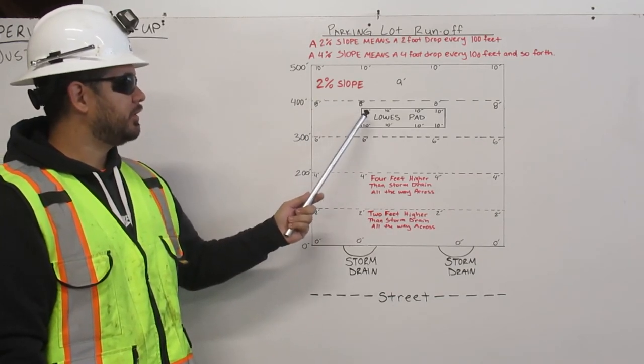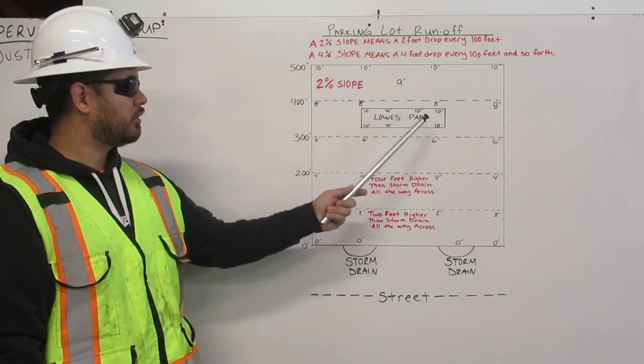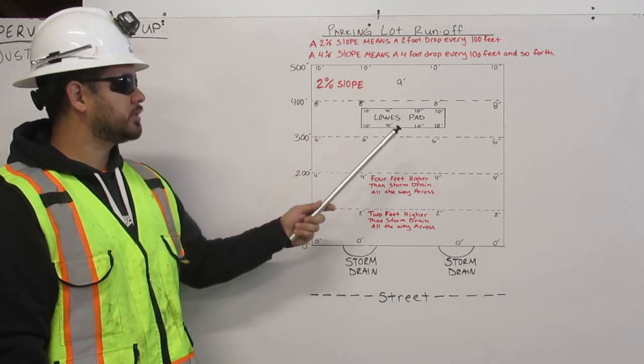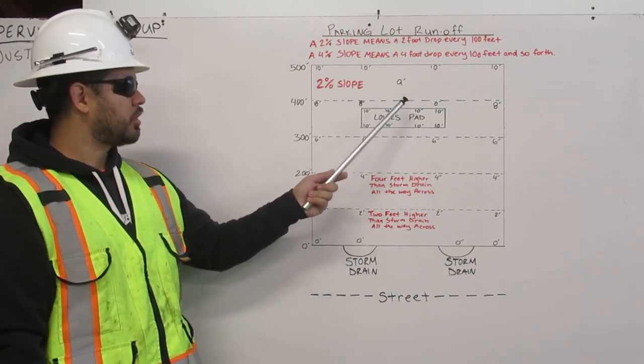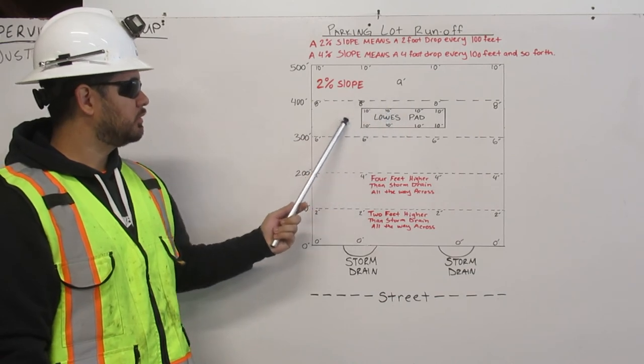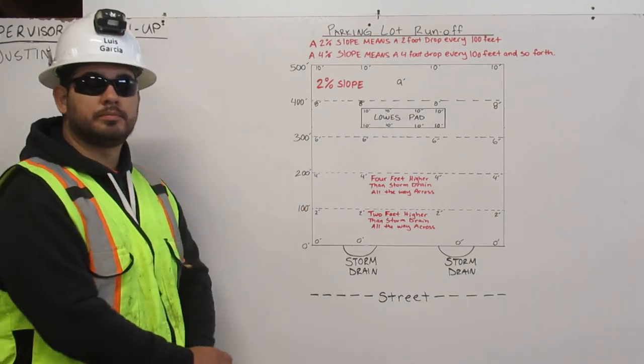Our lowest pad, we're going to make it 10 feet higher than the storm drain all the way around. That way when it rains, the water is going to drop off, come around, and down to the storm drain. Thank you.